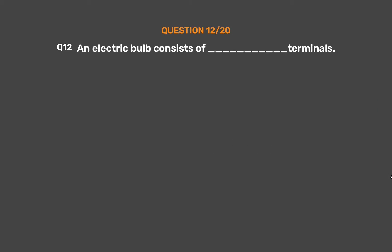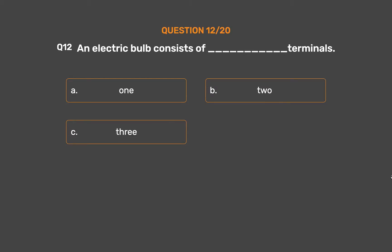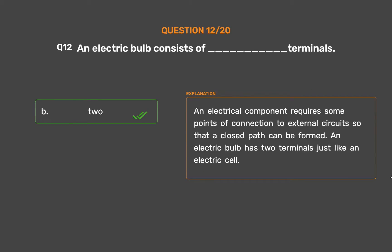Question number 12. An electric bulb consists of blank terminals. Option A: 1. Option B: 2. Option C: 3. Option D: 6. The correct answer is Option B, 2. An electrical component requires some points of connection to external circuits so that a closed path can be formed. An electric bulb has two terminals just like an electric cell.